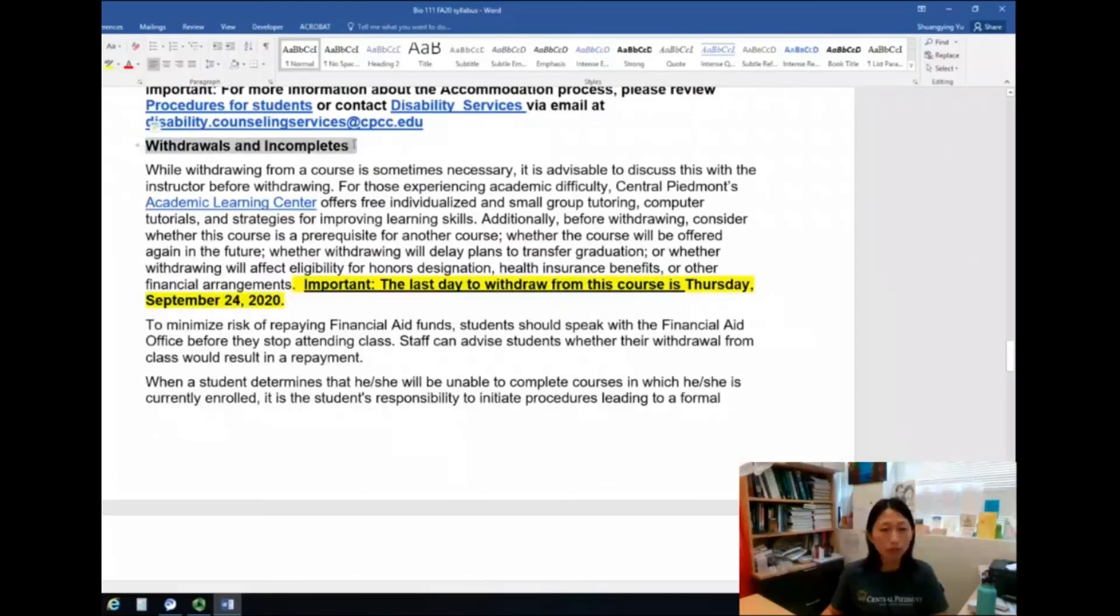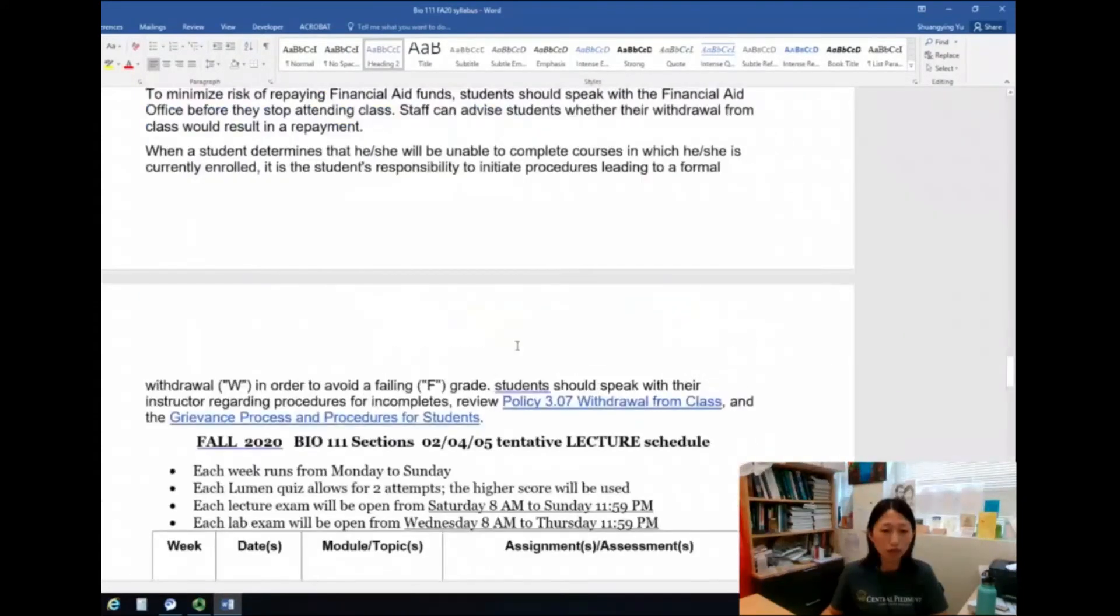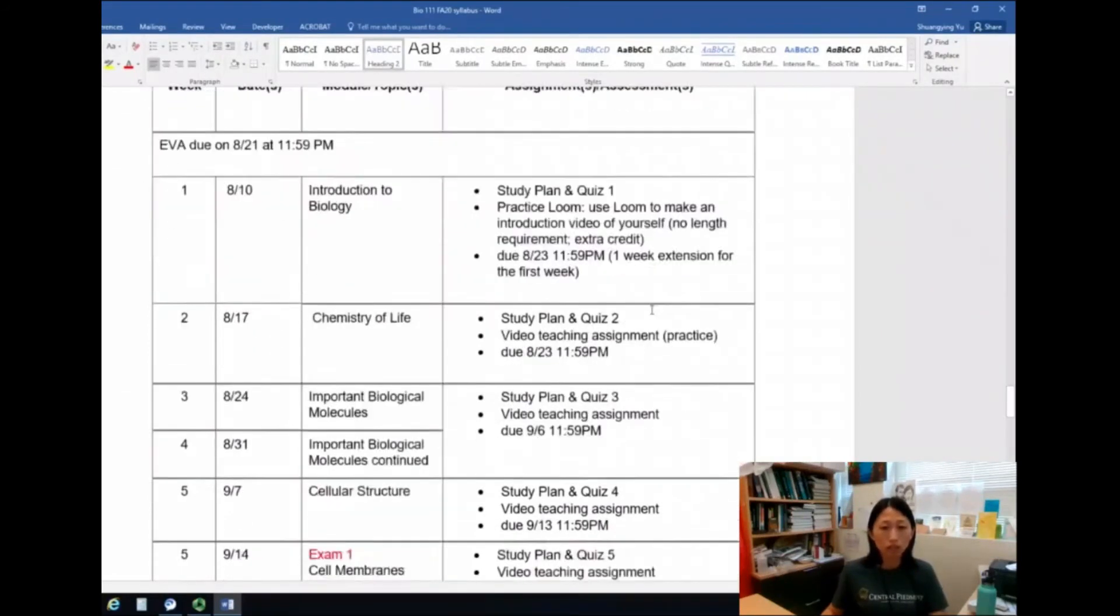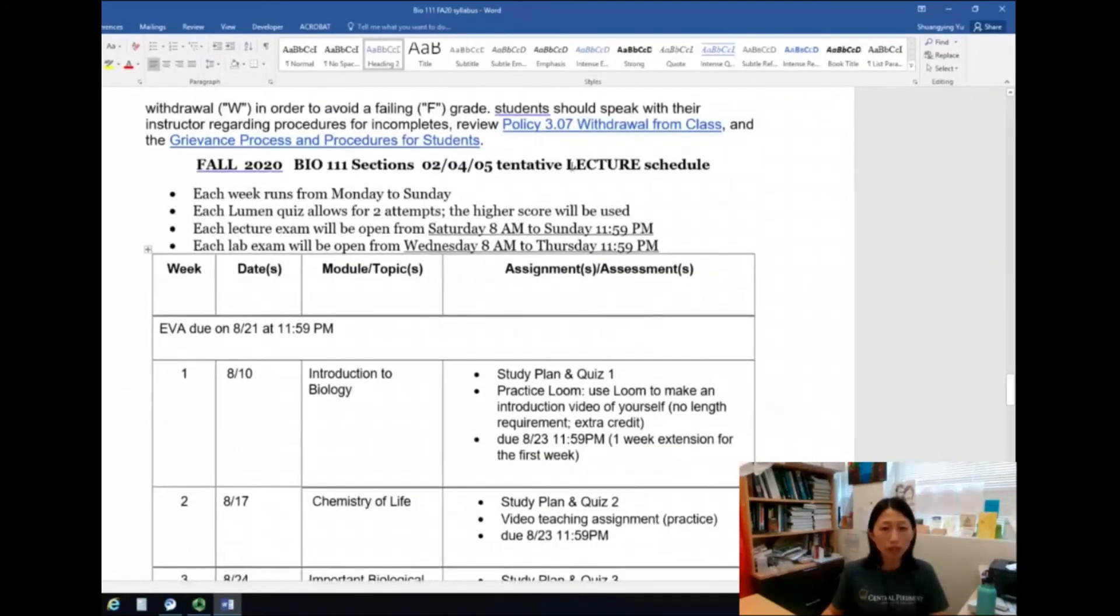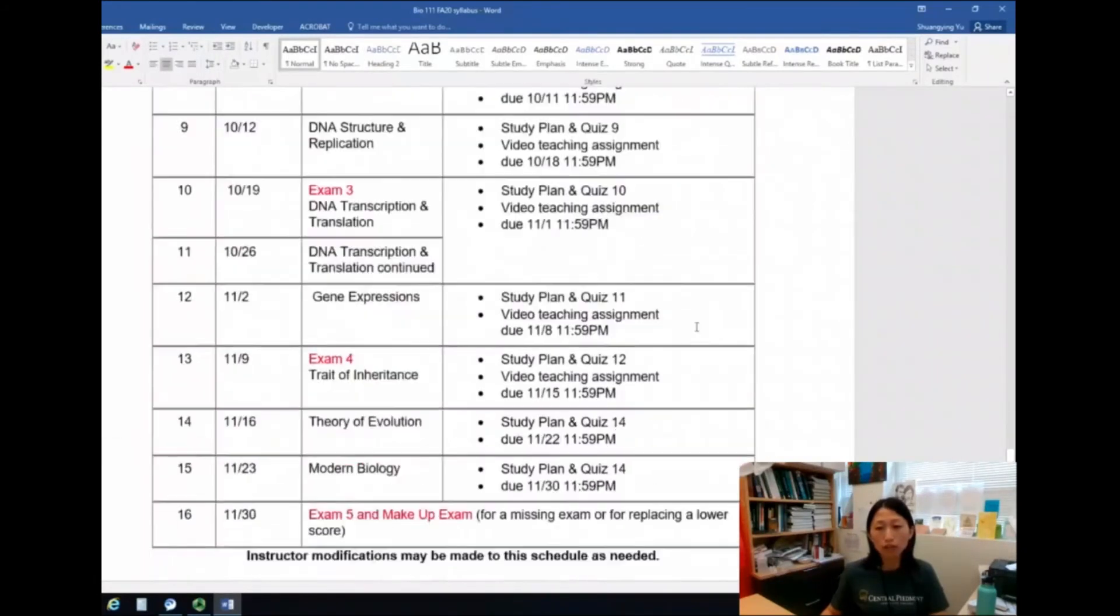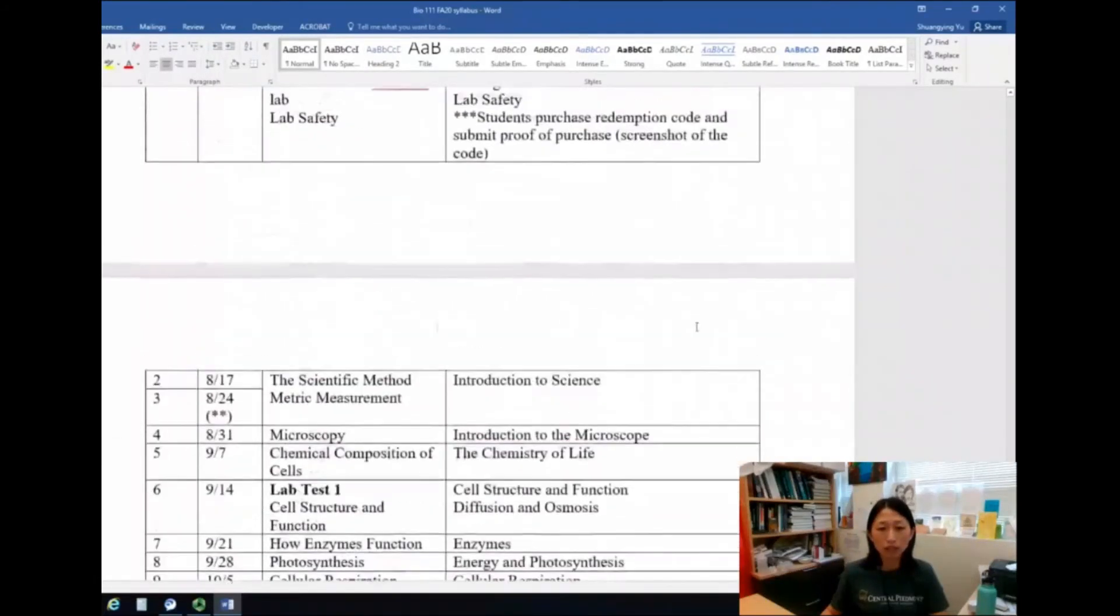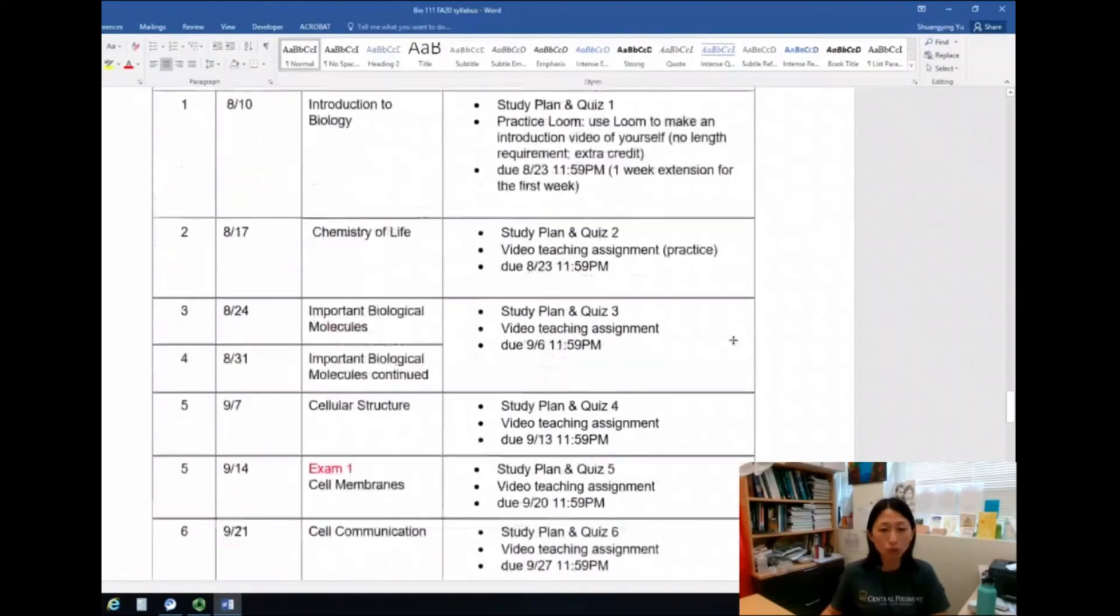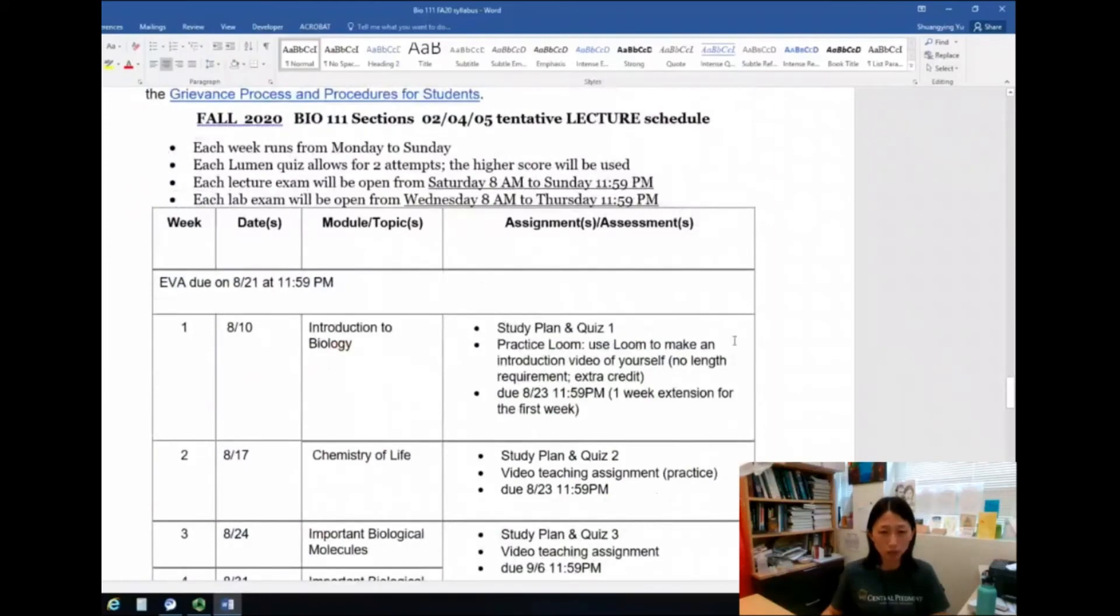Withdrawals and incompletes, this is an important section. I will let you read the information by yourself. So again, remember that September 24th is the last day to withdraw from class. This is the schedule. The first table is for lecture, and then if you scroll down to the later page, you will see a schedule for the lab. So let me just go over the schedule real quick.